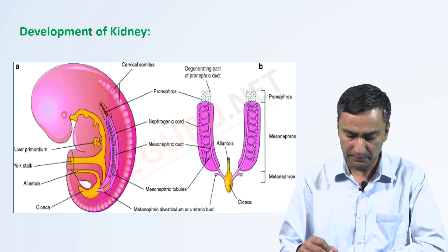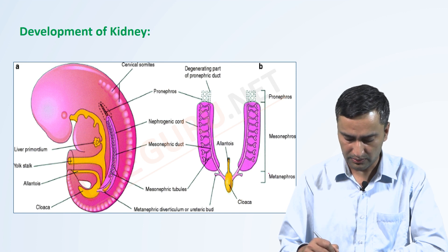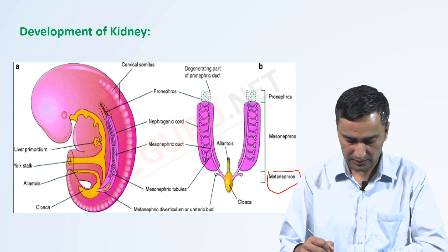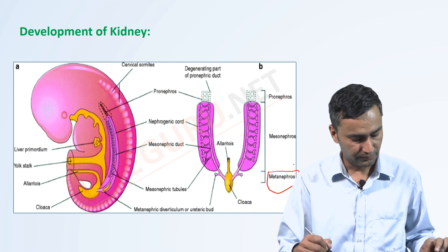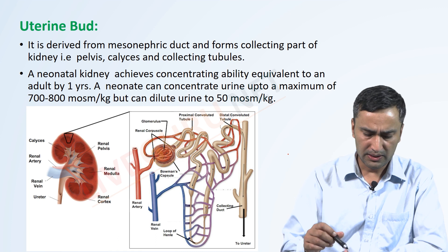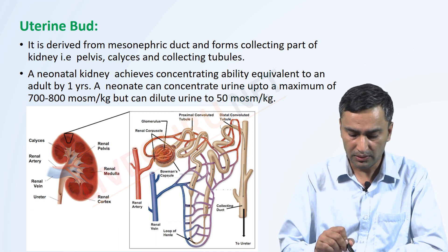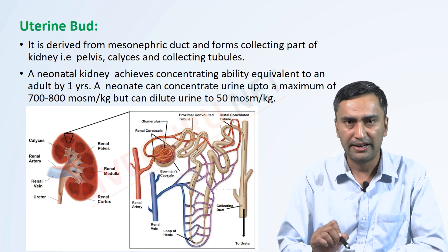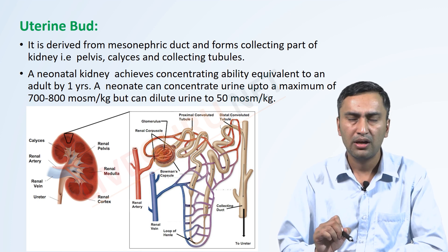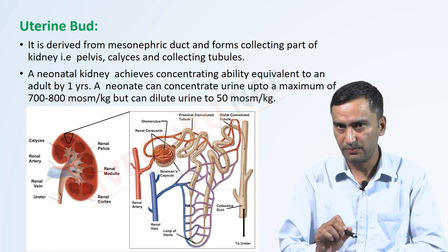There are three developing parts for the kidney: pronephros, mesonephros, and metanephros. We talked about the metanephros, which forms two parts: one is the metanephric blastema, and the other is the ureteric bud. The ureteric bud is basically formed from the mesonephric duct, which forms the collecting part of the kidney — the pelvis, calices, and collecting tubules.